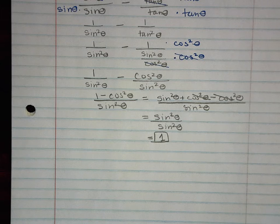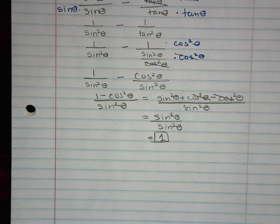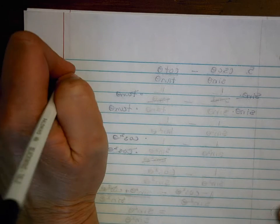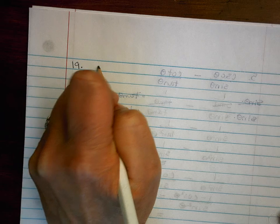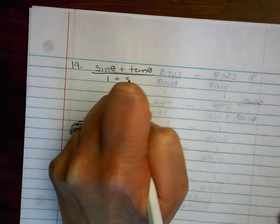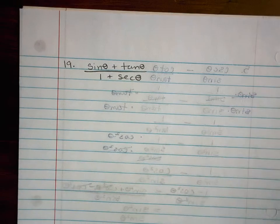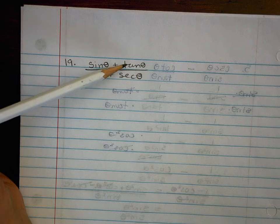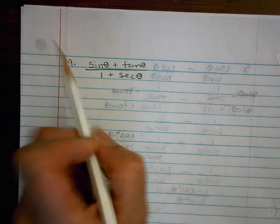You might have seen it differently — you might have done something by getting a common denominator first. However you do it, as long as you get to that same simplified form. Now let's take a look at number 19. For this one, you can start lots of different ways. I'm going to start by rewriting tangent as sine over cosine, which is one of the definitions.